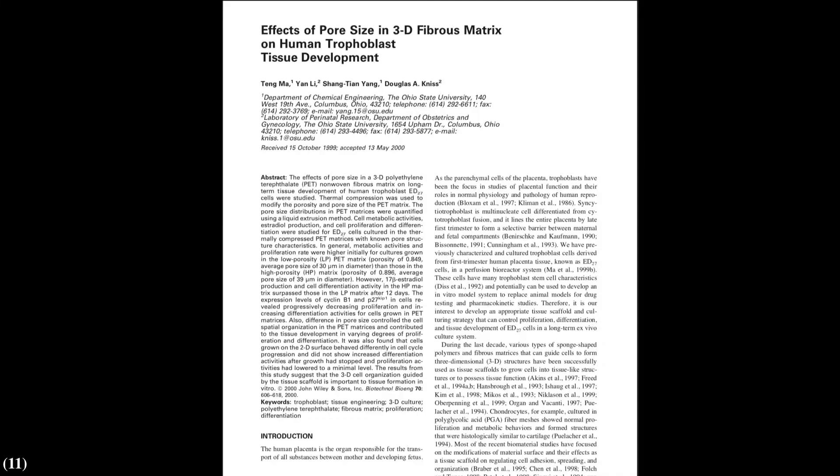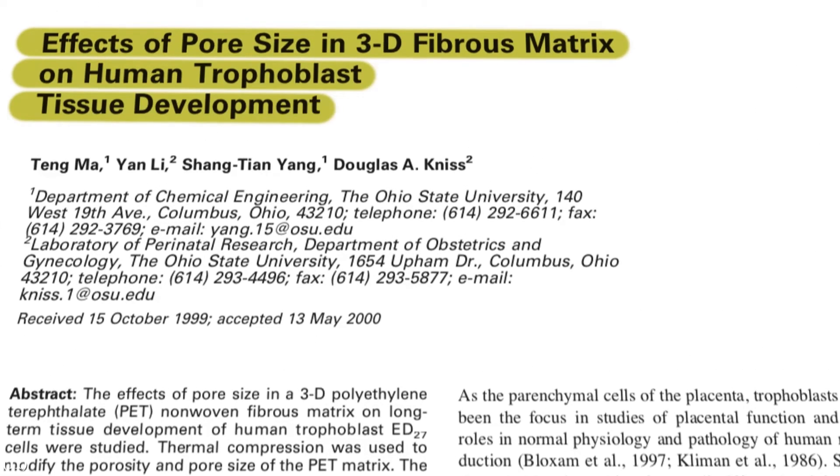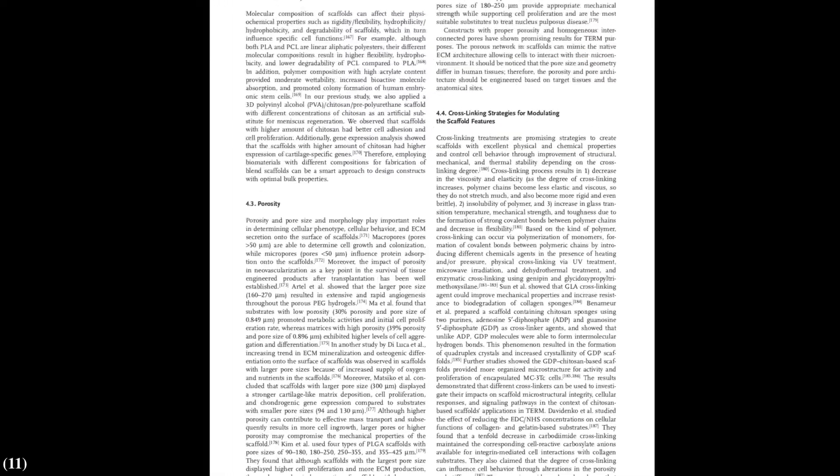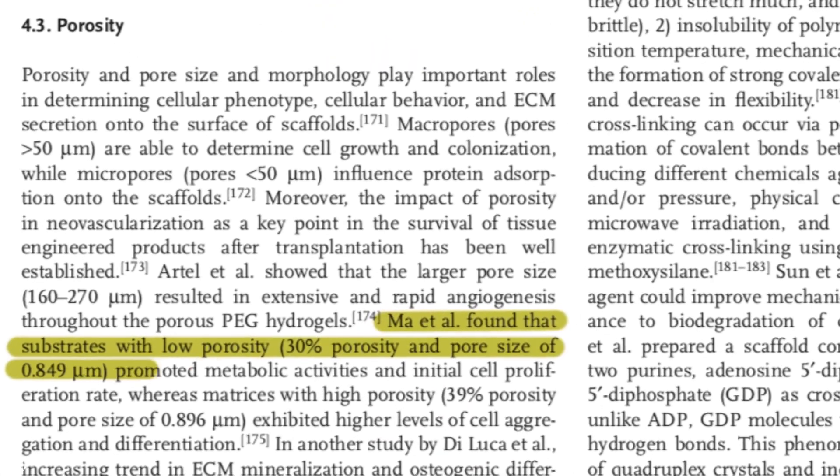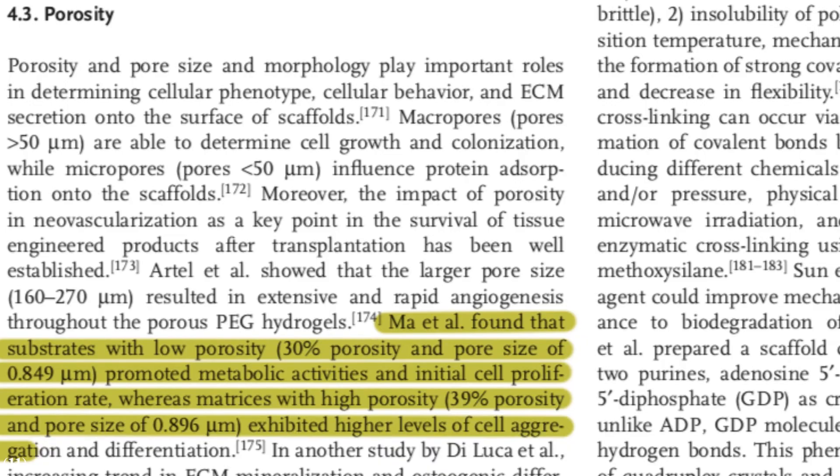For example, in a study by Ma and colleagues, they found that low porosity, about 30%, with the size of 0.84 micrometers, can promote metabolic activity and the rate of cell proliferation. But 39% porosity, with the size of 0.9 micrometers, showed higher level of cell aggregation and differentiation.